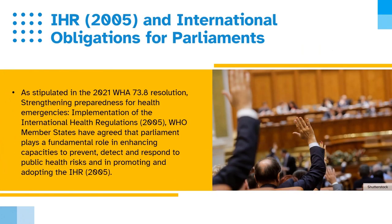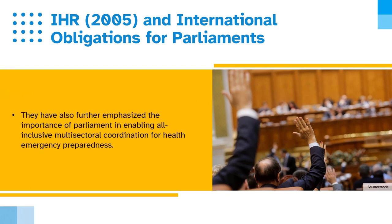What do the IHR 2005 version and the international obligations mean for parliaments? As stipulated in the 2021 WHA 73.8 Resolution on Strengthening Preparedness for Health Emergencies, WHA Member States have agreed that Parliament plays a fundamental role in enhancing capacities to prevent, detect and respond to public health risks and in promoting and adopting the IHR. They have also further emphasised the importance of Parliament in enabling all-inclusive multi-sectoral coordination for health emergency preparedness.